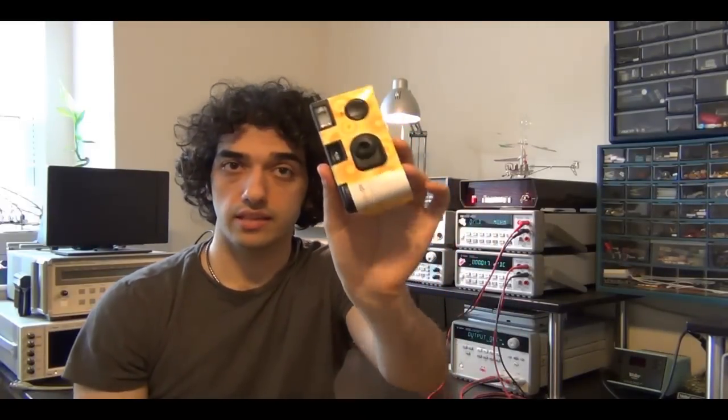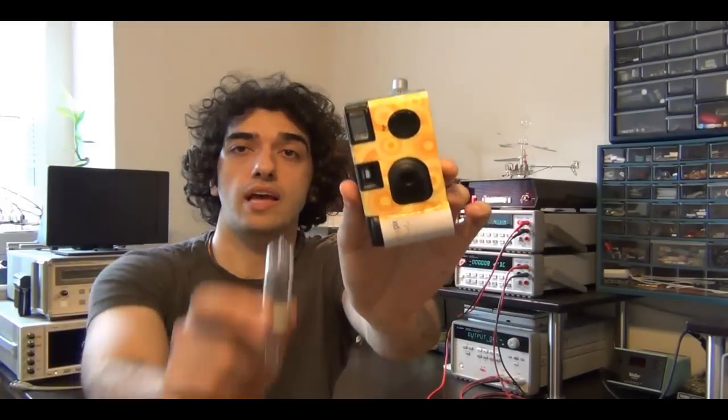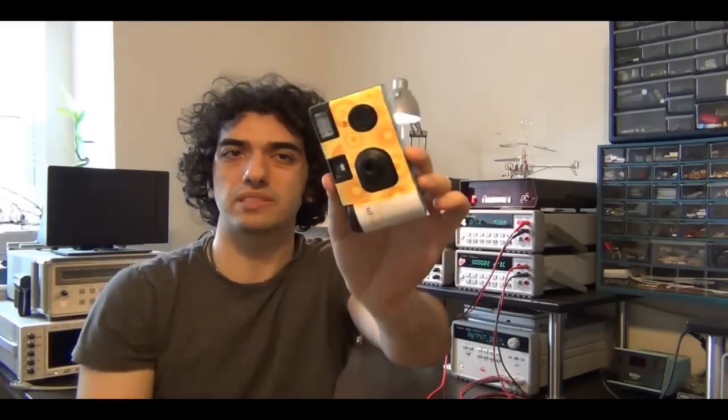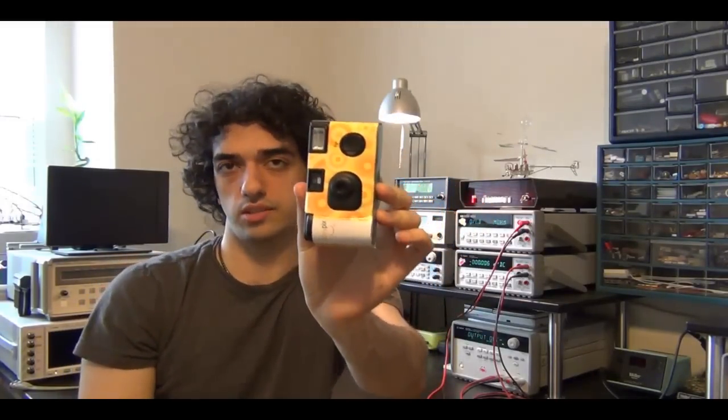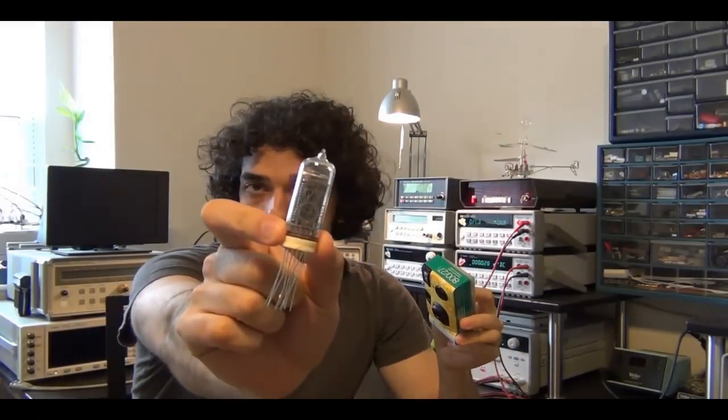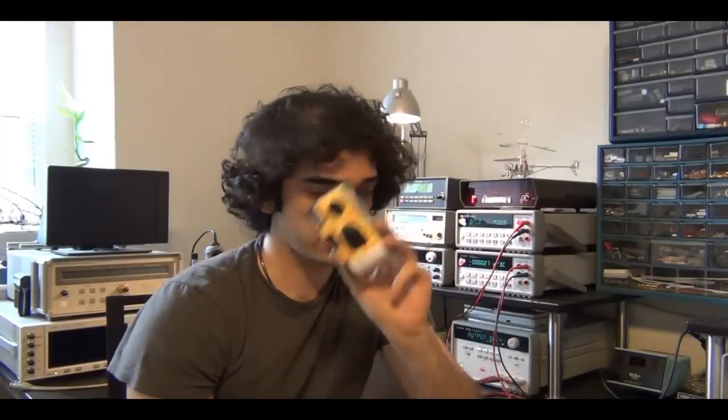We're going to see if we can combine this disposable camera and this Nixie tube. Specifically the flash circuit inside a disposable camera. In the process, we're going to learn exactly how that flash circuit works at the schematic level and also using some measurements. We're also going to take a look at these Nixie tubes. So let's get started and see what I'm talking about here.